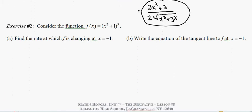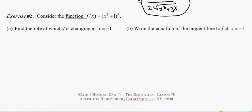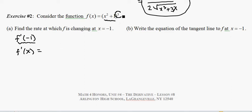Let's take a look at exercise number 2. It asks us to consider a function which is clearly the composition of two functions. Letter A asks us to find the rate at which f is changing when x is negative 1 — we need to find f prime at negative 1. Anytime we're asked to find the derivative at a particular x value, it's a good idea to first find the derivative function f prime of x. We've got an inner function x squared plus 1 and an outer function, the cubing function. Pause the video and see if you can use the chain rule to find this derivative.